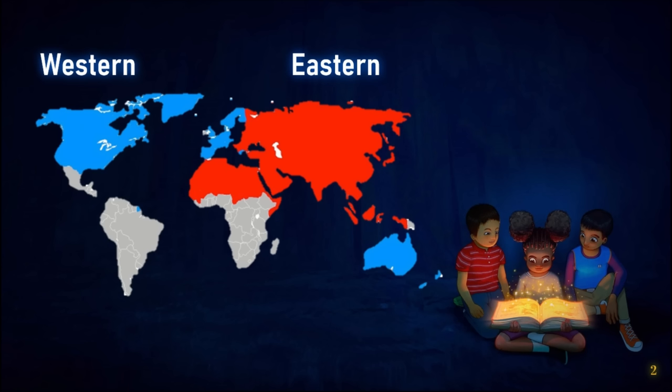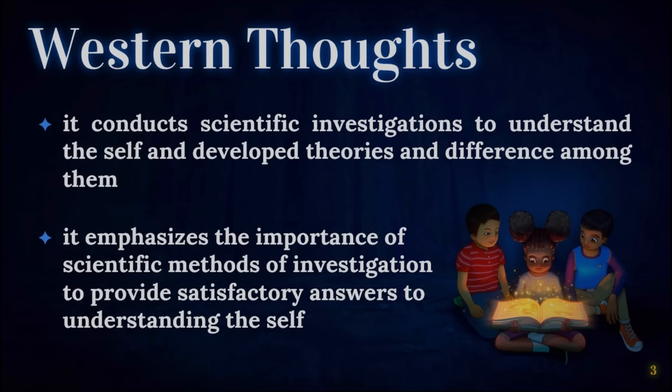The eastern represents Asia while the western represents Europe and North America. Countries geographically closer to each other may share commonalities, but there are also many factors that create differences. Even in the Philippines alone, each region may have similar or varying perceptions regarding the self.